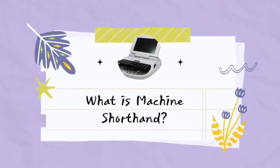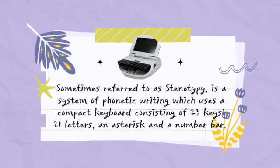Before we proceed with the discussion, let's first address the question: what is machine shorthand? As a review — if you can recall from my previous videos, I have uploaded the definition of machine shorthand. But let's have a short review. Machine shorthand, as defined in this book, is sometimes referred to as stenotypy. It is a system of phonetic writing which uses a compact keyboard consisting of 23 keys: 21 letters, an asterisk, and a number bar.